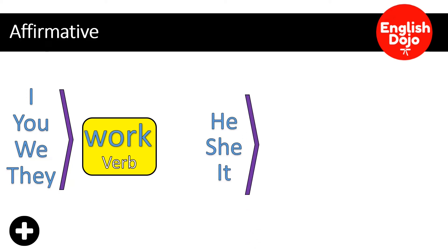Para he, she, it, es un poquito diferente. Necesitas el verbo, pero le necesitas agregar una S, ES o IES, dependiendo el caso. Entonces sería he works, él trabaja. She works, ella trabaja. It works, eso trabaja.